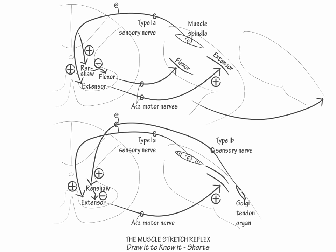The type 1a and 1b fibers fire at the same rate, but the muscle spindle fibers have a much lower threshold to fire than the Golgi tendon organs. Thus, the muscle spindle fires first and then later the Golgi tendon organ fires, which terminates the muscle stretch reflex.